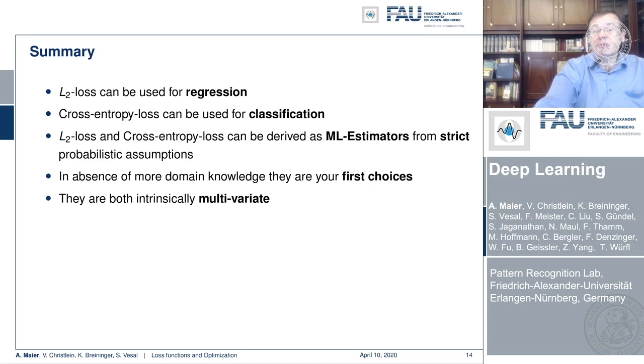What we're doing here is completely in line with probability theory. In the absence of more domain knowledge, these are our first choices. If you have additional domain knowledge, then of course it's a good idea to use it because you will build a better estimator. And they're intrinsically multivariate, so we are not just stuck with two-class problems. We can go to multi-dimensional regression and classification problems, no big deal.